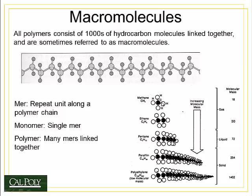The length of the chain is a very important parameter in the properties of the polymer. Very short chain molecules such as methane and ethane tend to be gaseous in state. As the chain lengthens, it takes on a liquid state at ambient pressure and temperature, and as the chain becomes much longer, such as paraffin wax or polyethylene, it becomes a solid.